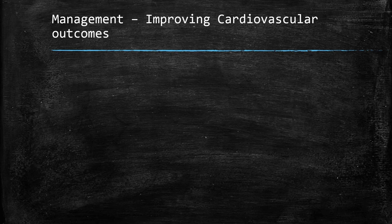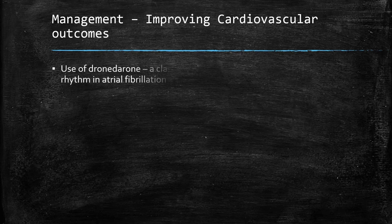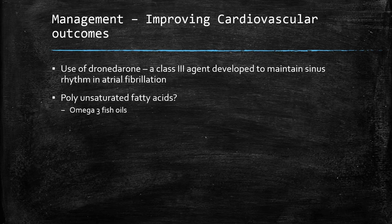Improving cardiovascular outcomes: what can we do to prevent stroke and complications of AF? There is dronedarone, a new agent thought to be safer than amiodarone. Consumption of omega-3 fish oils is also discussed, though its benefit is still debatable.